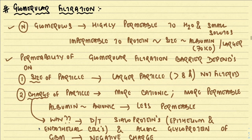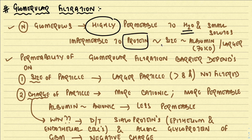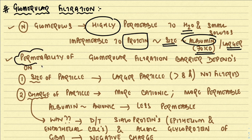Now let us look at the glomerular filtration process. Normally the glomerulus is highly permeable to water and small solutes, but impermeable to proteins the size of albumin or larger (approximately 70 kilodaltons or more). The factors affecting permeability: number one is the size of the particle — the larger the particle, the lesser the permeability. Large particles more than 8 angstroms are not filtered at all.